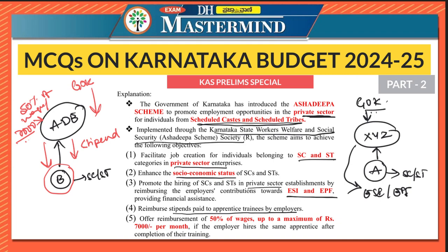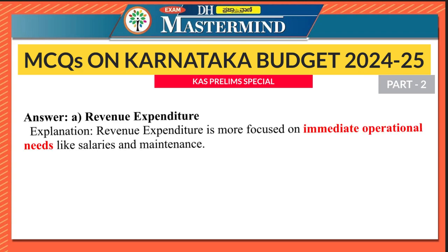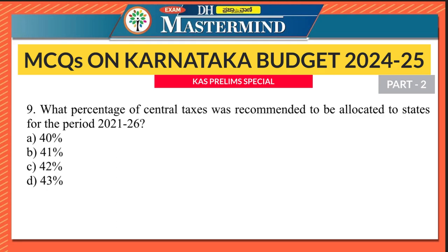The eighth question: Which expenditure category is more focused on immediate operational needs? Immediate operational needs such as salaries and wages come under revenue expenditure. Therefore the right option is option A — revenue expenditure is more focused on immediate operational needs like salaries and maintenance.